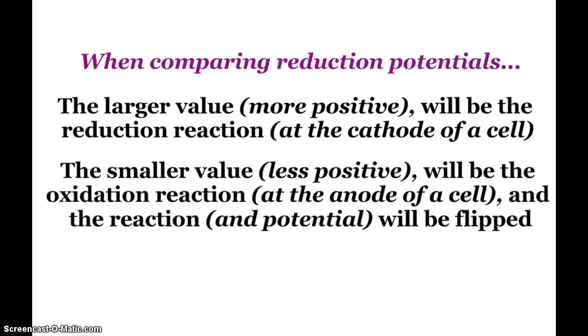The smaller value, less positive, will be the oxidation reaction. That's going to be at the anode of the cell. The reaction would be flipped, as well as its potential, if you're going to use it in that one equation. Or if someone asks what's the oxidation potential, you'd have to flip the sign of the reduction potential.